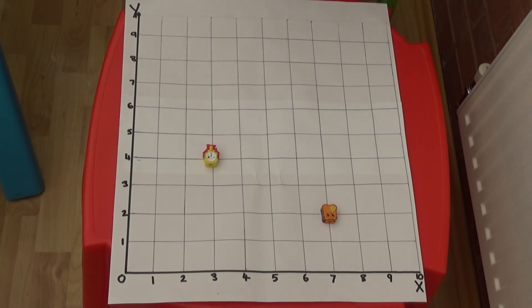If I read up the y-axis I can see the toy is positioned four squares up. So the y-axis coordinate is four.